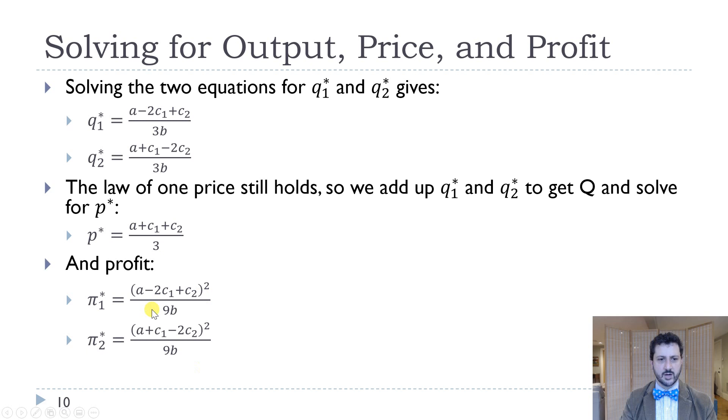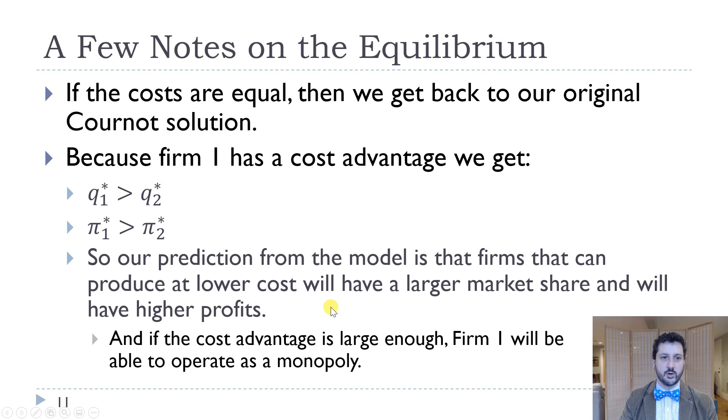And then here we have profits. Note a few things about our profits. In this case, firm one has a cost advantage and so they're going to produce more and they're going to earn higher profits. It does not mean that their price is different, because we still have the law of one price. They still have to have the same price because they're producing the exact same good. But if you think about it in terms of like a farm, if you are the farmer and you're like, all right, I'm producing corn or wheat or soy. It's the same corn or wheat or soy that my neighbor is producing. But if I can reduce my costs, then I will sell more and I will earn higher profit. And so that's, I think, important to remember that even in this type of competition, there's still an incentive to reduce costs.